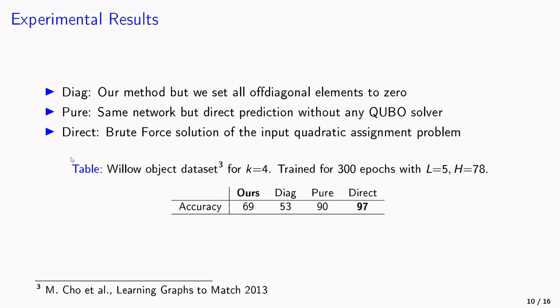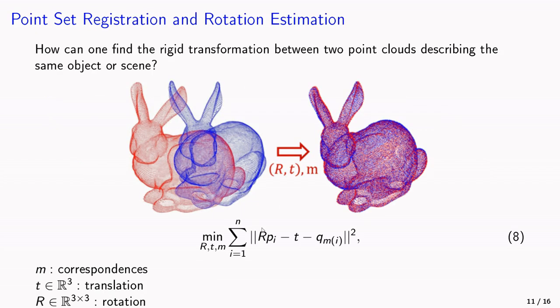For the experimental results, we compared our method with three baselines. The diag baseline is basically our method, but we set all off-diagonal elements to zero. The pure method has a network that directly predicts the solution without any QUBO solver. The direct method, there we have a brute force solution of the input quadratic assignment problem. For a network with five layers and a width of 78, we have here some table with accuracies. The direct method had 97% accuracy, and our method managed to find the ground truth permutation in 69% of cases.